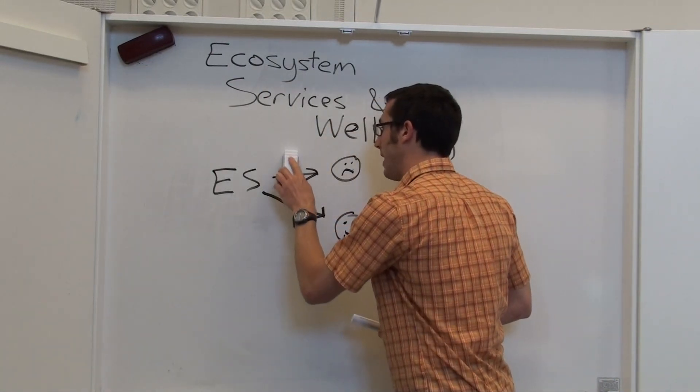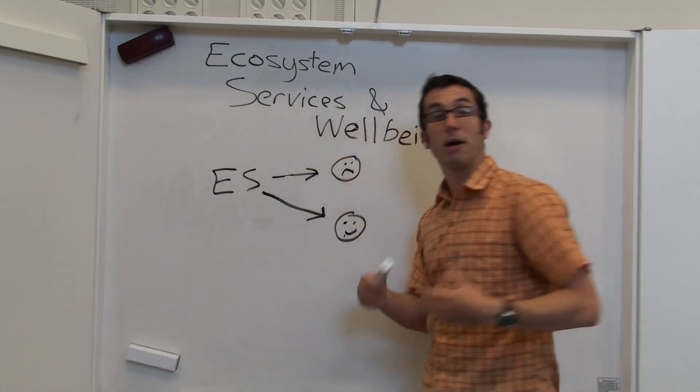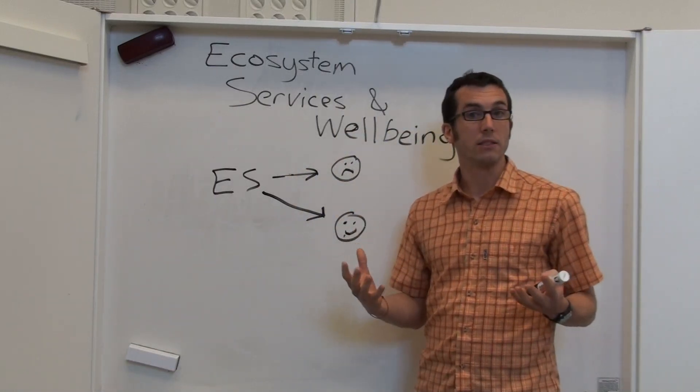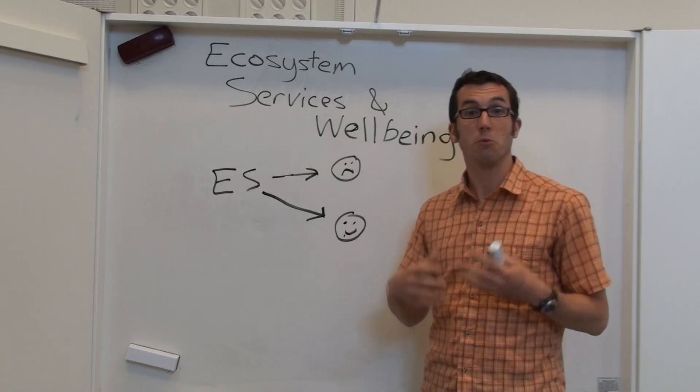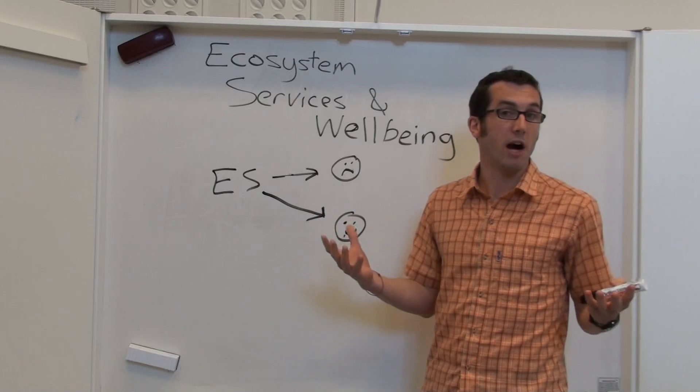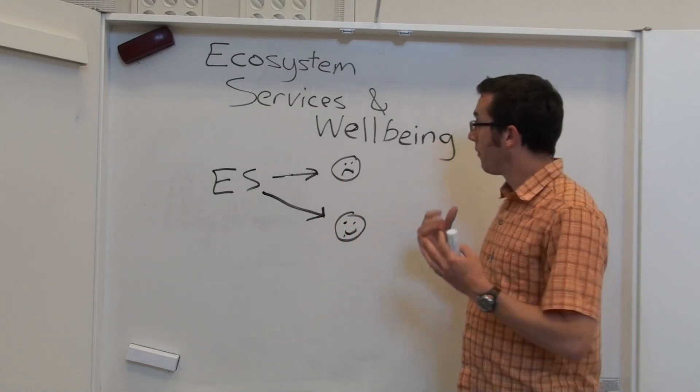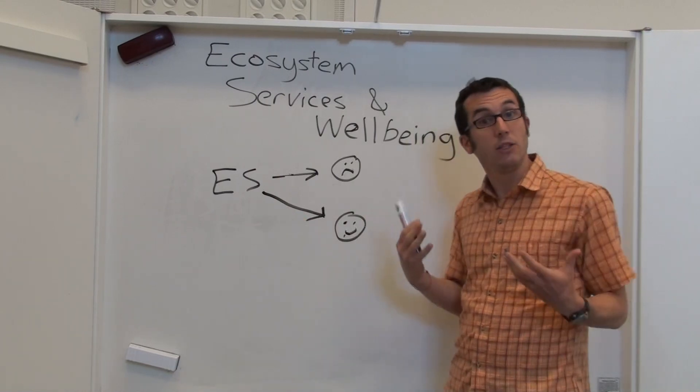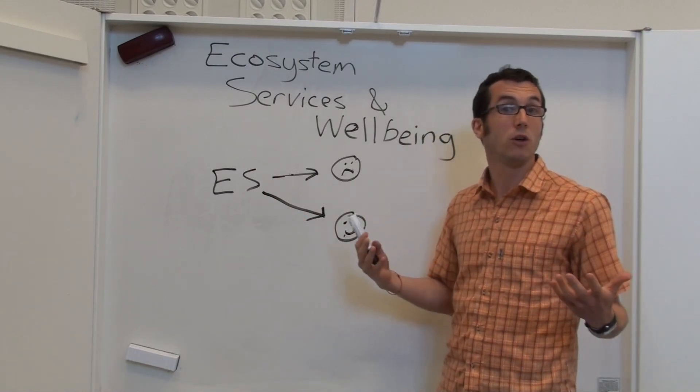Another key aspect is about the context of the individuals. We don't all need the same things. Some people have nowhere to live, some people have nothing to eat, some people have a lot of things to eat, but they live in an environment that makes them unhappy. So the ability of an ecosystem service to contribute to our well-being depends on our well-being context.